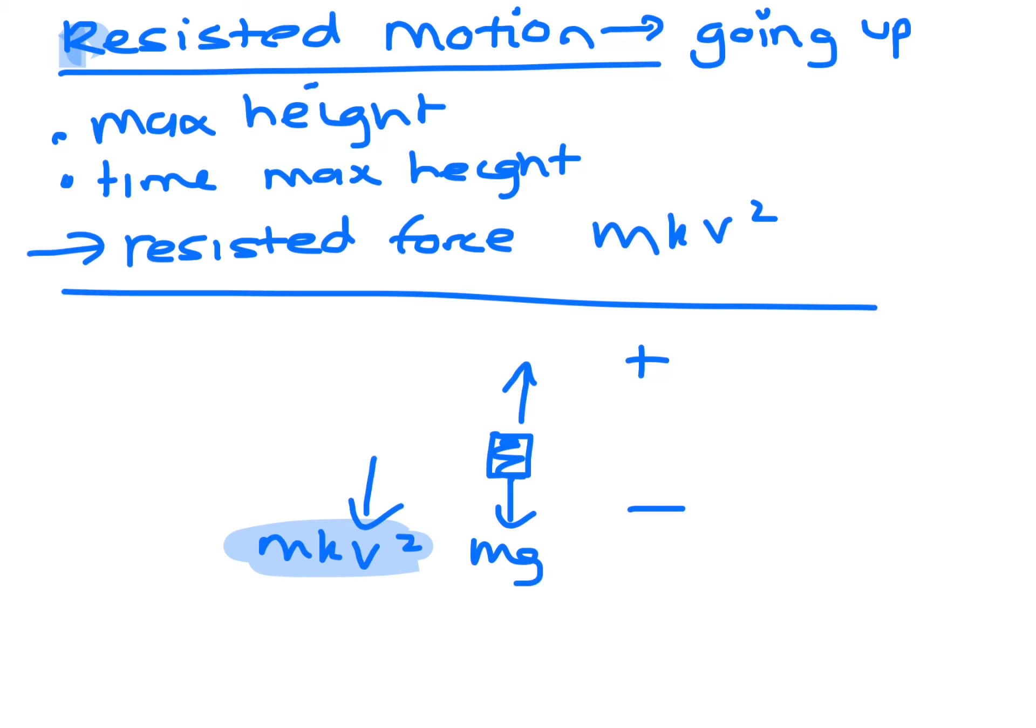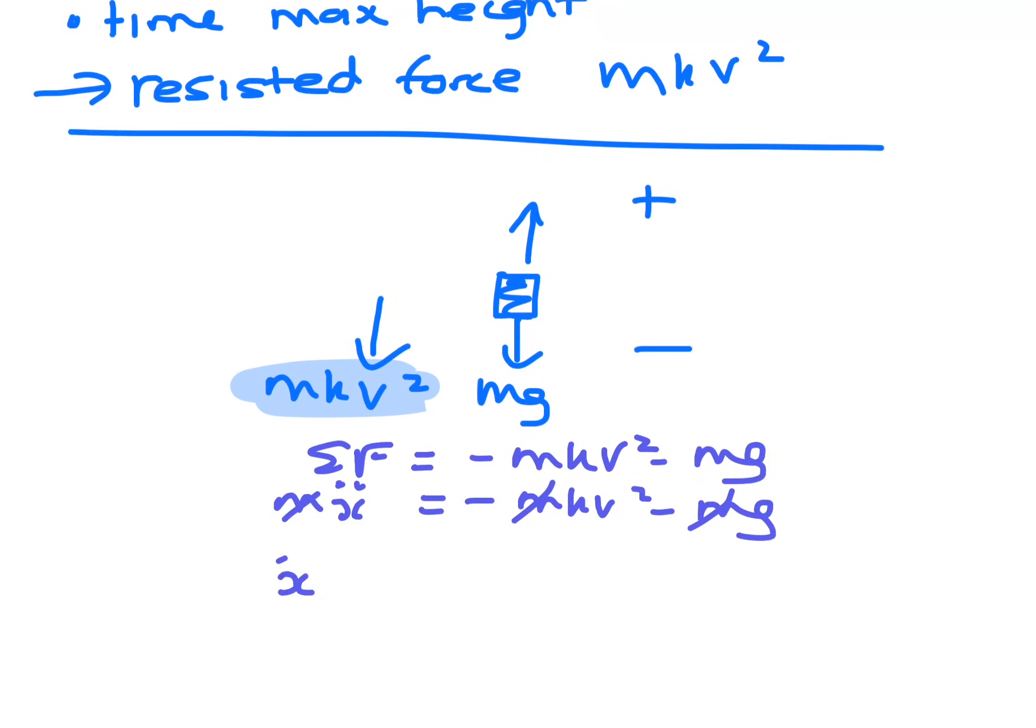So when we're looking at this case scenario, the sum of the forces is equal to minus mkv squared minus mg, and mass times acceleration will equal minus kv squared minus mg. The m's will go out, and you end up with x double dot is minus kv squared plus g.